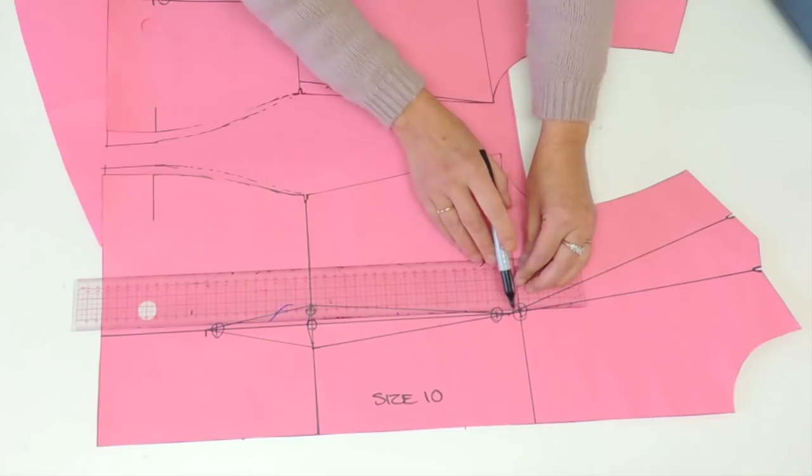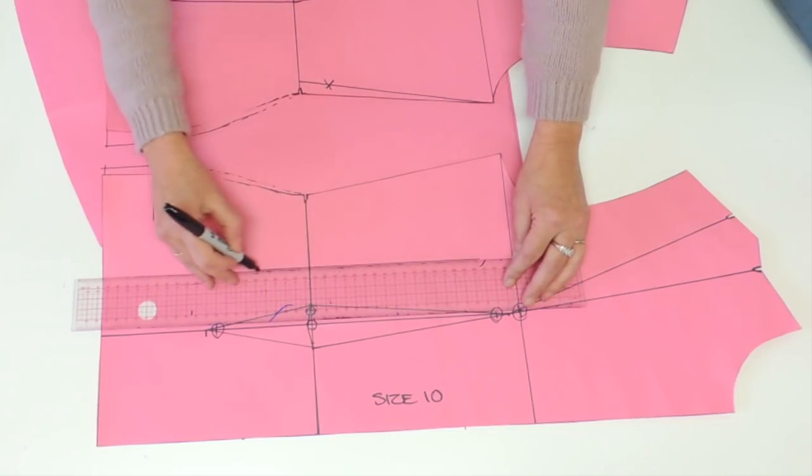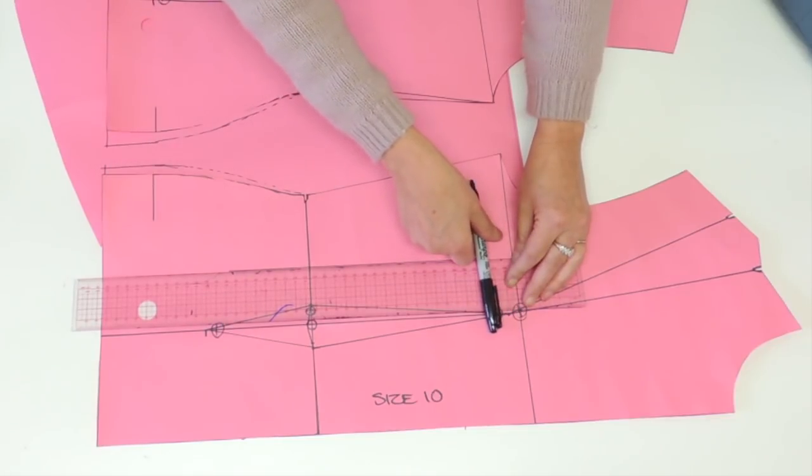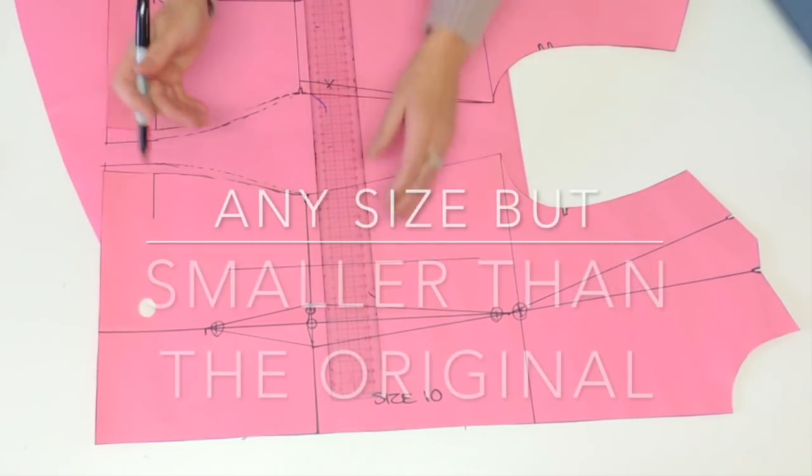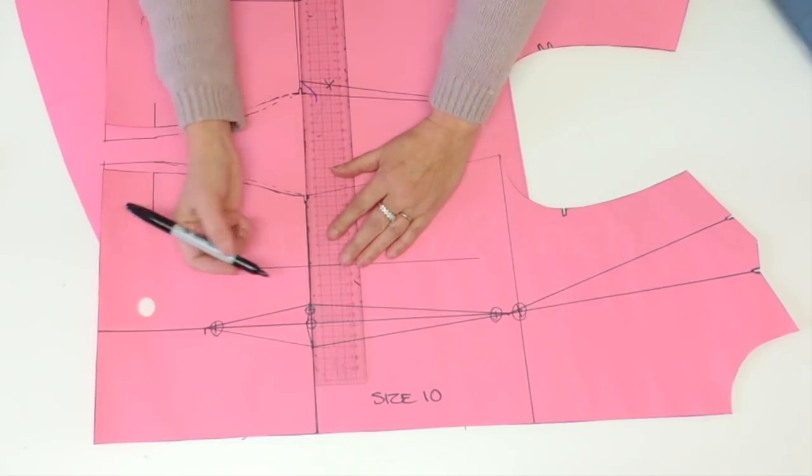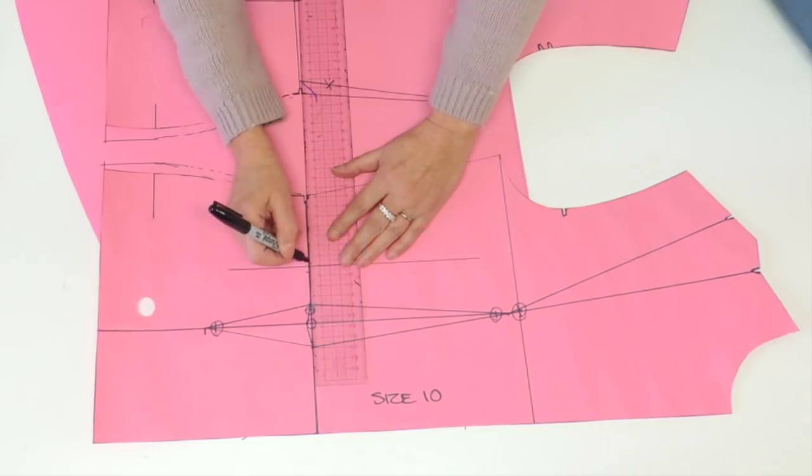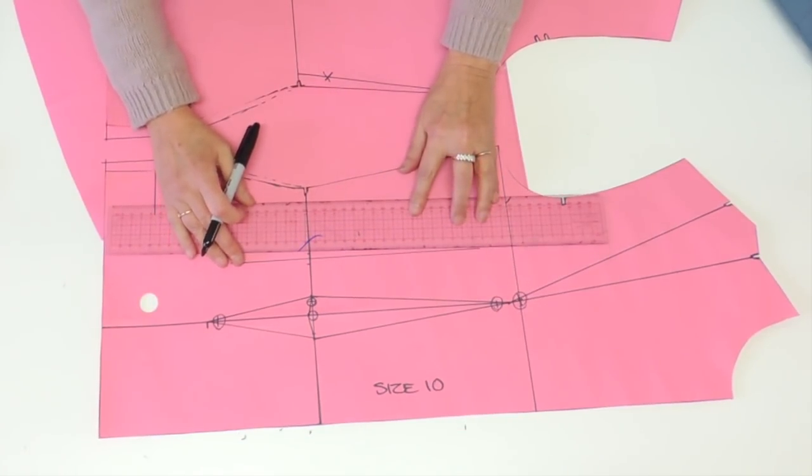So you trace a line that is going to be shorter than the original one, both sides. So shorter at the bottom, shorter from the top. And you could create a dart any size you like. For example, if I create a dart of one centimeter, I'm going to put five millimeters on each side and connect with both side pivot.